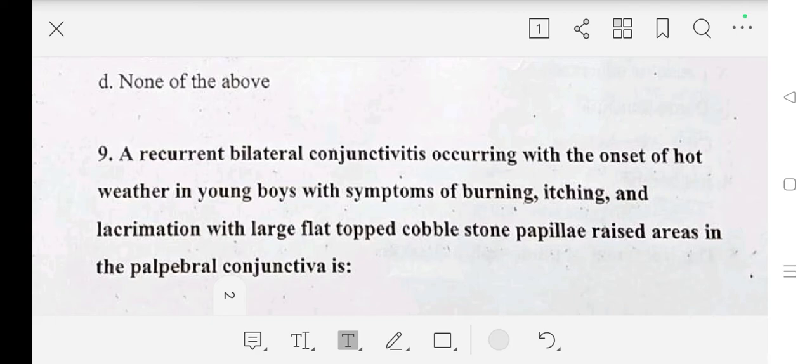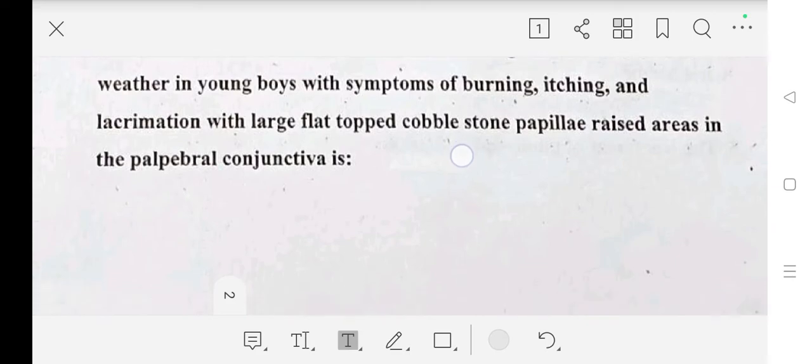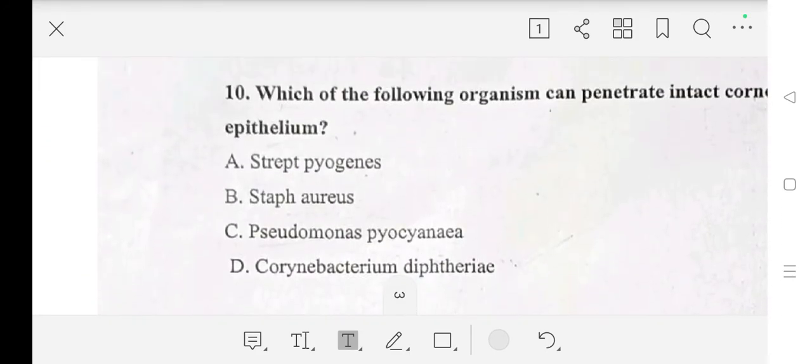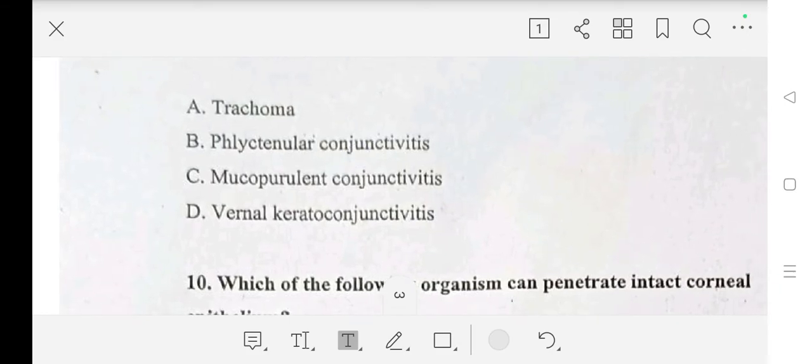Ninth question: a recurrent bilateral conjunctivitis occurring with the onset of hot weather in young boys with symptoms of burning, itching, and lacrimation with large flat-topped cobblestone papillae in the palpebral conjunctiva. Options are trachoma, phlyctenular conjunctivitis, mucopurulent conjunctivitis, or vernal keratoconjunctivitis. Answer is vernal keratoconjunctivitis.